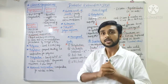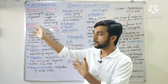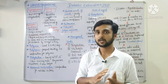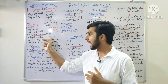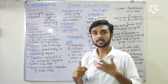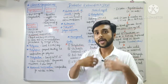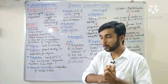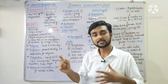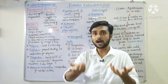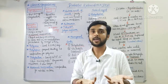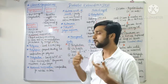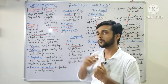Next we will see Kussmaul respiration — rapid and deep breathing. Because of metabolic acidosis, a high amount of acid is present in the blood. So the lungs compensate by producing rapid and deep breathing to expel CO2. CO2 is acidic in nature, so expelling it compensates for metabolic acidosis. We will see a decreased partial pressure of CO2 because of this CO2 loss.